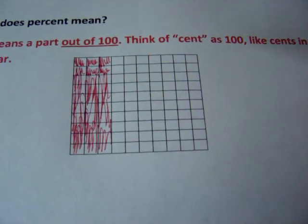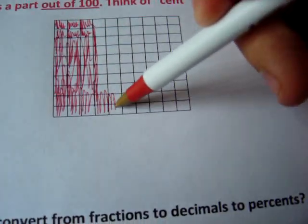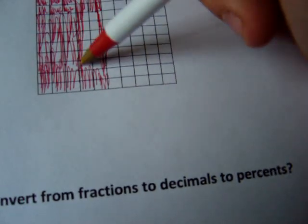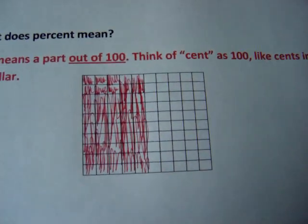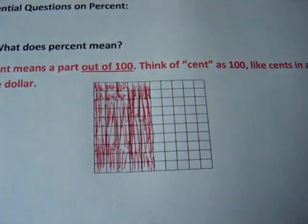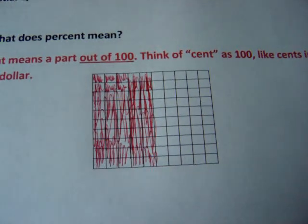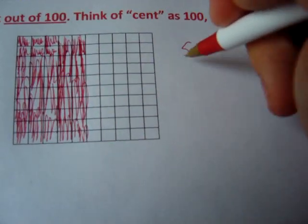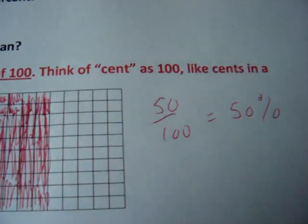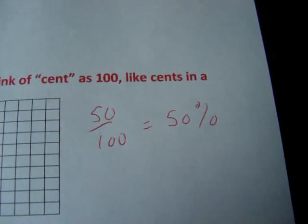And if I decide to shade in half of the whole thing, everybody knows what half is. That's pretty common. Half of anything is 50%. And sure enough, that's 50 out of 100 shaded in. Anytime you have a fraction out of 100, the numerator is your percent. So 50 out of 100 equals 50%. Percent means out of 100.